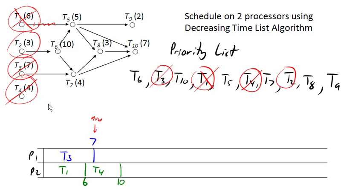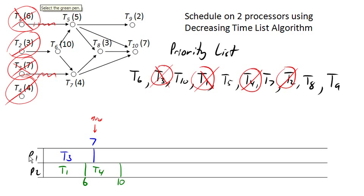At time seven, task three completes. We look and say, are there any new ready tasks? No — this task also has a prerequisite, so there are no new ready tasks. We look at what's next on the priority list that hasn't already been started, and the next thing is task two. So we start task two, assigning it to processor one. Task two has a completion time of three units, taking us out to time ten.